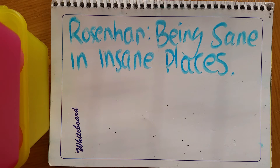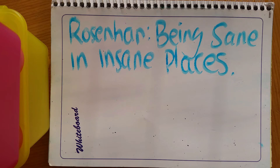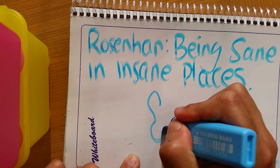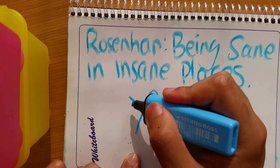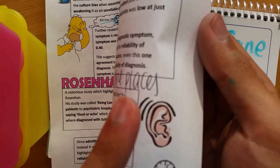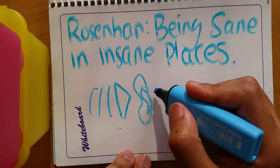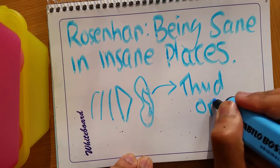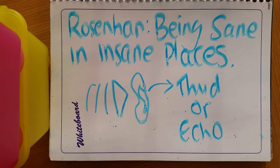The famous Rosenhan study 'Being Sane in Insane Places' is a notorious study highlighting the low reliability of classifying and diagnosing schizophrenia. In this US study, normal people presented themselves to psychiatric hospitals stating they were experiencing auditory hallucinations — voices saying 'thud' or 'echo' — which are not actually guidelines of auditory hallucinations. All these normal confederates were diagnosed with schizophrenia and admitted into hospitals.